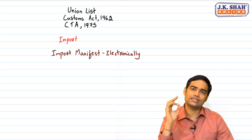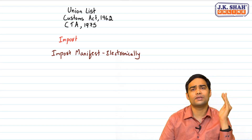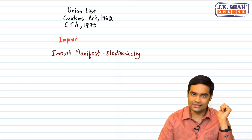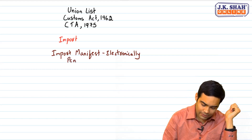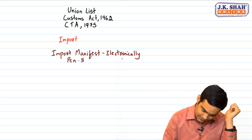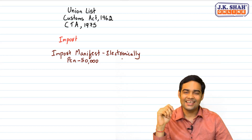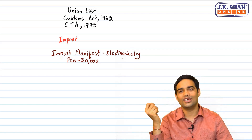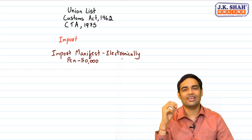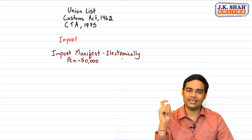The person in charge is responsible to file this. If the person in charge fails to submit the import manifest, there is a penalty of rupees 50,000 applicable on that person. If there is a genuine mistake, an amendment is allowed — you can inform the officer and get the amendment done.